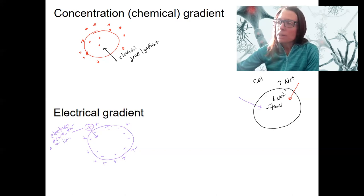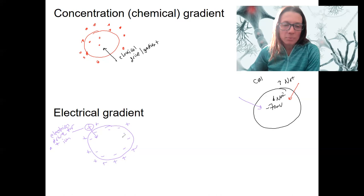But if we're talking about the movement of a negative thing, so chloride for example, just talking about electrical, a negative ion is going to have a drive out. So this is the electrical drive for a positive ion.